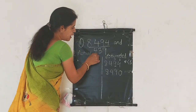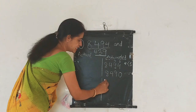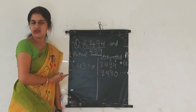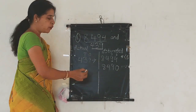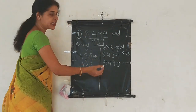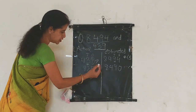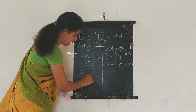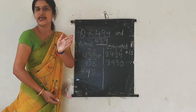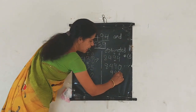The next number is 439. Let's estimate this also. We round it to the nearest 10 — we look at the ones place and the tens place. The ones place is 9, which is greater than 5. The rule is: we write 0 in the ones place and add 1 to the tens place. So 439 becomes 440. In other words, 439 is nearer to 440 than to 430. So 439 rounds off to 440.